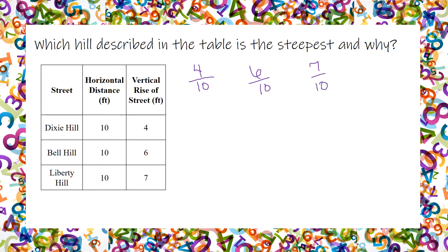So which one of these is the greatest number? Remember positive and negative don't matter for steepness, but we do want to know which one is the greatest. The greatest one is Liberty Hill, because it has the greatest slope — that fraction is the greatest.